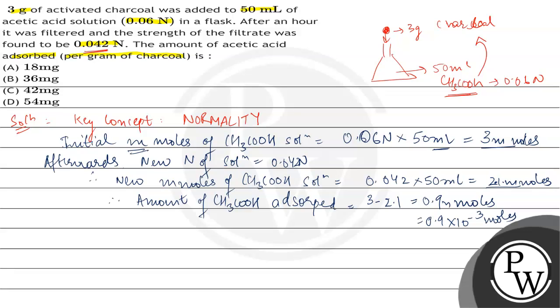Now, 0.9 millimoles. If you have to find out the weight of acetic acid adsorbed, number of moles multiplied by the molar mass of acetic acid which is 60.